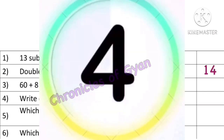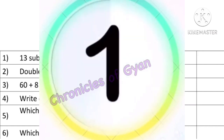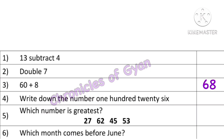Question 3: 60 plus 8. You have to try the sums doing it orally. Like 60 plus 8 — what is it in the unit place? It is 0. So when we add the number in the unit place, 60 plus 8 is 68. The answer is 68.